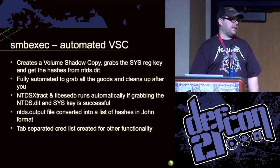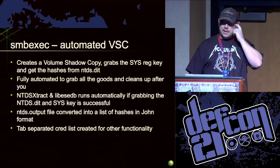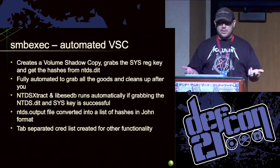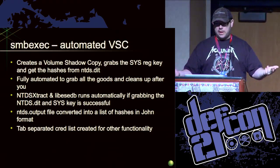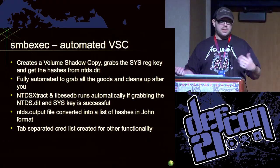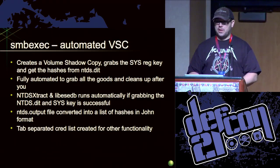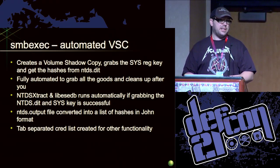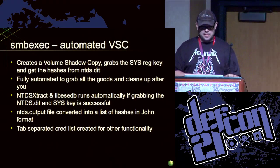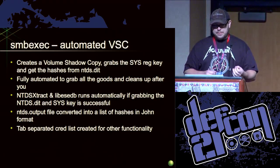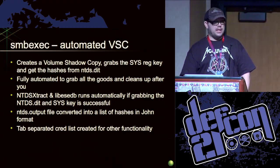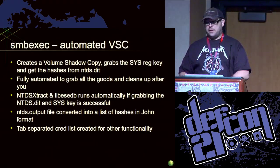SMB exec — let's get stuff off the domain controller too while we're at it. I went to my friend Google and Google told me how to run everything from the command line. What this actually does is it logs in over port 445, creates a volume shadow copy, saves off the ntds.dit and the sys key. When it's done, it cleans up after itself — it deletes the volume shadow copy it created. I know there was a blog post in 2011 about this, and there was actually a forum post back in 2005 about doing this as well, so it's been around a while. Once everything is done, it runs ntds extract and libesedb to get the hashes out. It also creates a tab-separated cred list for other functionality within SMB exec.